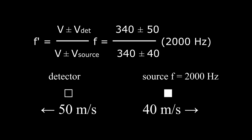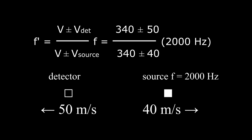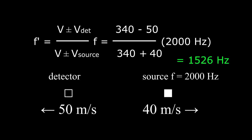In this third example both the source and detector are moving away from each other, so both are trying to decrease the shifted frequency f prime. For the velocity of the detector, which occurs in the numerator, we choose the minus sign to make the ratio smaller. For the velocity of the source, which occurs in the denominator, we choose the plus sign to make the ratio smaller. The calculation gives 1526 hertz.